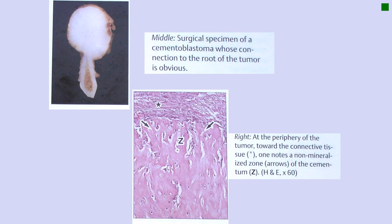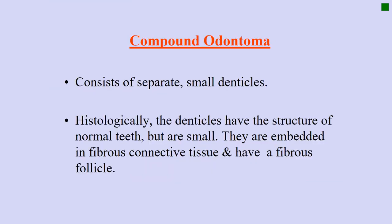When the specimen is surgically removed, the cementoblastoma specimen is continuous and has a connection with the root. Histologically, at the periphery of the tumor towards the connective tissue, one will note a non-mineralized zone of cementum. That is where you appreciate the continuity between the tooth surface and the tumor.